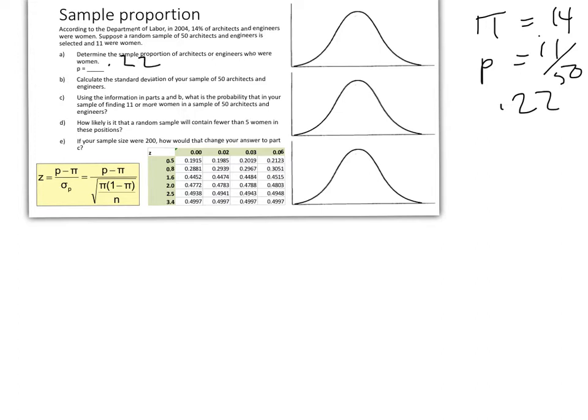Now we have three different things we're going to look at. I've got the three bell curves here to draw on. They want to know the standard deviation of your sample of 50 architects and engineers. That is this denominator right here: π times 1 minus π over n, and you take the square root of that. Don't forget to take the square root. Sometimes in all the calculations, people forget.